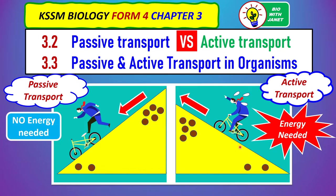For active transport, it's the opposite — it's like a person cycling uphill. If you've ever tried to cycle uphill or climb up a hill, you know it can be quite tiring because you have to work against the force of gravity. A lot of energy is needed to cycle uphill. Likewise, active transport requires the use of energy. In active transport, molecules move from an area of lower concentration to an area of higher concentration — from low to high — like a person cycling uphill from a low level to a higher level.